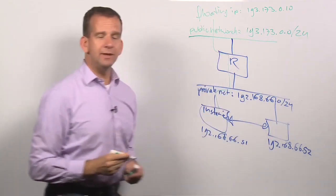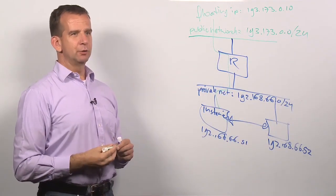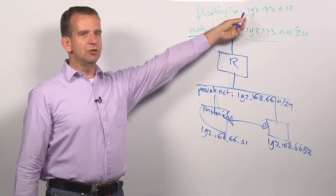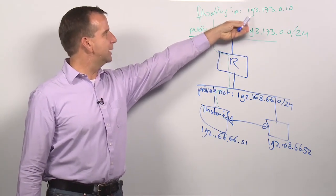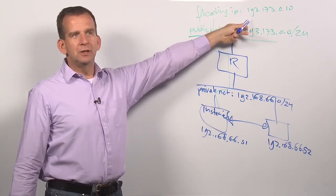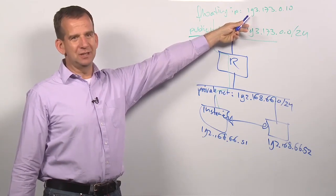Like 193.173.0.10, for example. This is like an IP address that the instance is going to lease. And once this IP address is connected to the instance, this is what external users are going to use to access the instance.